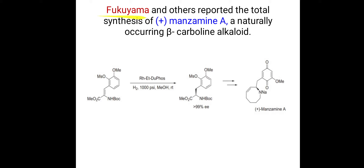Researcher Fukuyama and others reported the total synthesis of plus-manzamine A, which is a naturally occurring beta-carboline alkaloid. Again, the starting compound contains a carbon-carbon double bond. The catalyst used is rhodium ethyl DUPHOS — rhodium is the transition metal and ethyl DUPHOS is the chiral ligand, together making a chiral catalyst. Hydrogen is used at a pressure of 1000 psi, with methanol as solvent, and the reaction is performed at room temperature.